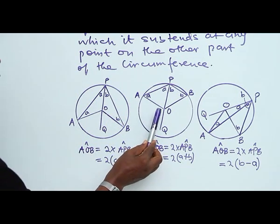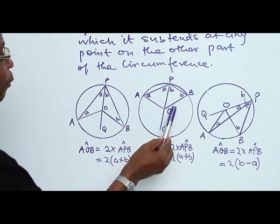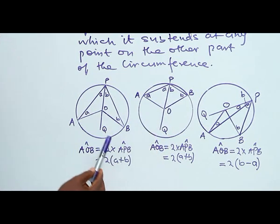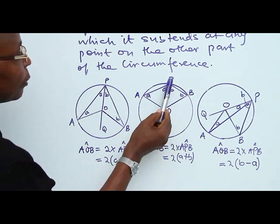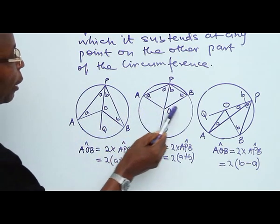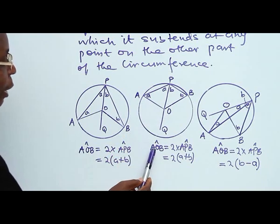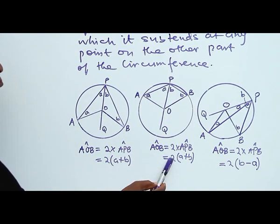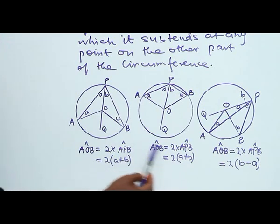Similarly, we have the reflex case, where angle AOB is a reflex angle — an angle more than 180 degrees but less than 360 degrees. An obtuse angle is more than 90 but less than 180 degrees. For the reflex case, the radii from center O to the circle are equal. This exterior angle to the triangle is 2A, and similarly 2B — just like the obtuse case. So angle AOB = 2 times angle APB = 2(A + B). The reflex case and the obtuse case yield the same result; it is just that the diagrams are a little bit different.